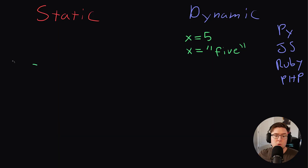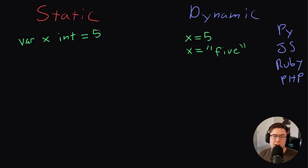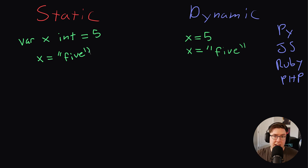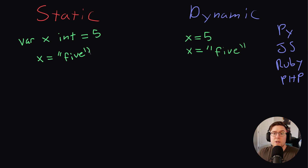Now let's take a look at how Go, a statically typed language, approaches this same problem. In Go, we might write something like var x int, and set it equal to five. So this is a little more verbose, but we're being explicit — we're saying this variable x is an integer. Now what happens if later in our program we type x equals the string five? Well, our program completely breaks. Go, TypeScript, C++, or any of these statically typed languages does not allow us to change the type of a variable. Once the type has been set, we need to keep the values stored within that variable of that same type.